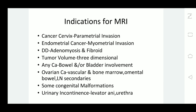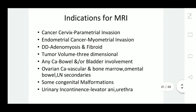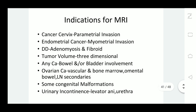MRI can provide three-dimensional pictures to determine tumor volume. In any pelvic cancer, bowel and bladder involvement can be assessed by MRI, aiding in staging of gynecological cancer. In ovarian cancer, MRI can also detect secondaries in the bowel, omentum, bone marrow, or lymph nodes.